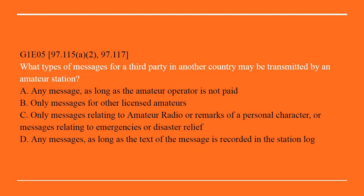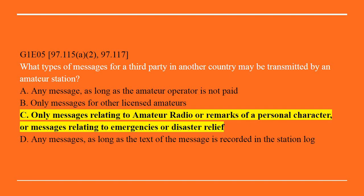G1E05: What types of messages for a third party in another country may be transmitted by an amateur station? A. Any message as long as the amateur radio operator is not paid. B. Only messages for other licensed operators. C. Only messages relating to amateur radio or remarks of personal character or messages relating to emergencies or disaster relief. D. Any messages as long as the text of the message is recorded in the station log. The best answer here is C: Only messages relating to amateur radio or remarks of a personal character or messages relating to emergencies or disaster relief.